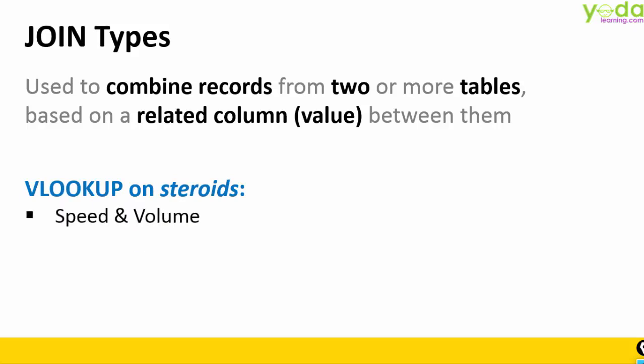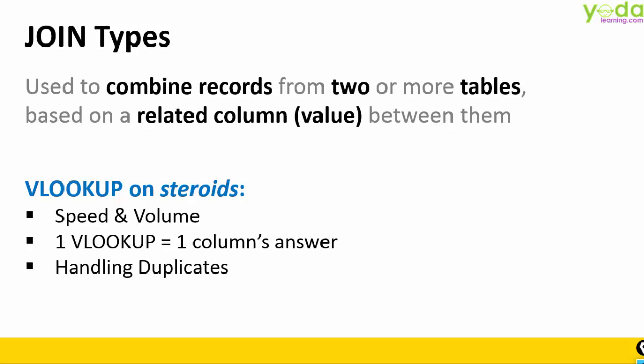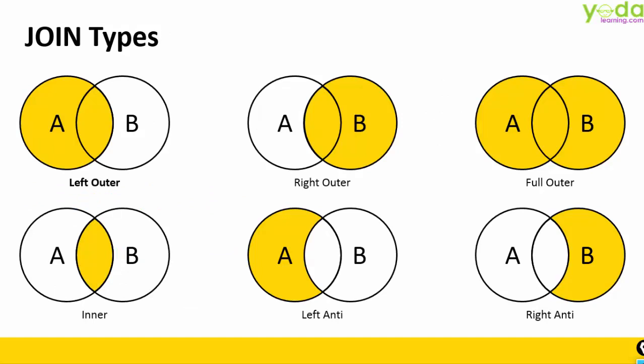Why do we call this VLOOKUP on steroids? First, it has speed and can work with voluminous data — if you have worked with Excel's VLOOKUP on more than one to five lakh records and it tends to hang, that is what I am referring to. One VLOOKUP can give one column's answer, but join types can match records based on a common primary or composite key and give multiple columns answers. We also saw how duplicate IDs are handled. You have six variations — some software applications may have four or three — but these variations are very powerful for preparing special reports. Hope you understood the basic theory of join types. We will see practical applications and examples in the upcoming videos.